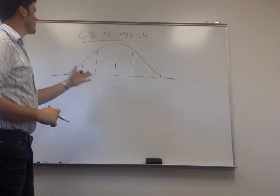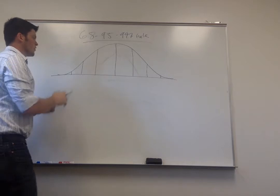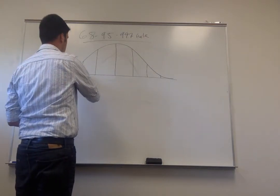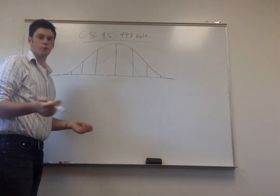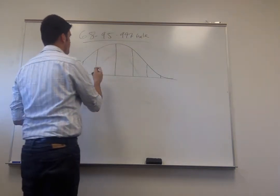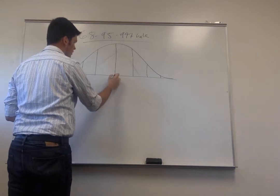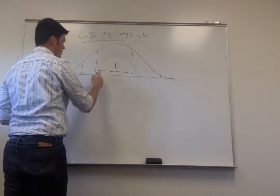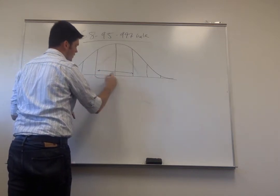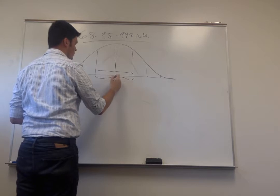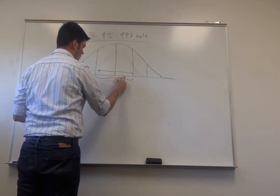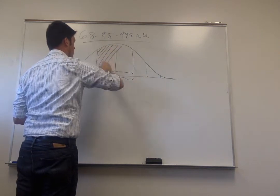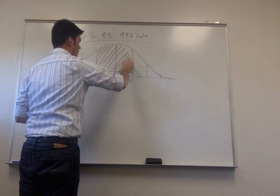The 68-95-99.7 rule tells us about percentages underneath the curve. If you add up all the area underneath the curve, it equals 100%. This rule tells us that if you go one standard deviation to the left and to the right of the mean, the amount of area in that space is equal to 68%.